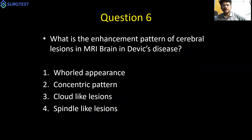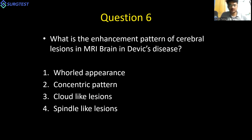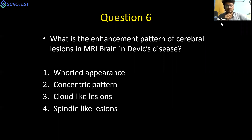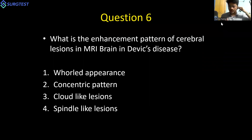Question six: what is the classical enhancement pattern of cerebral lesions on MRI brain in Devick's disease? This feature is given only a passing mention in Harrison's, but it is important because it is a named imaging feature and therefore likely to appear as an MCQ.